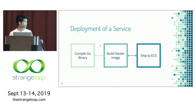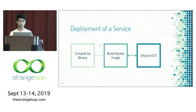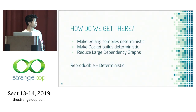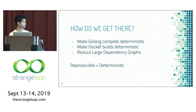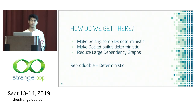Deploying a service at Samsara looks like this: we compile a Go binary, build it into a Docker image, and ship it to ECS. I'll be talking about three sections: how to make Go compiles deterministic, how to make Docker builds deterministic, and how to reduce large dependency graphs. I'll be using 'reproducible' and 'deterministic' interchangeably throughout this talk.